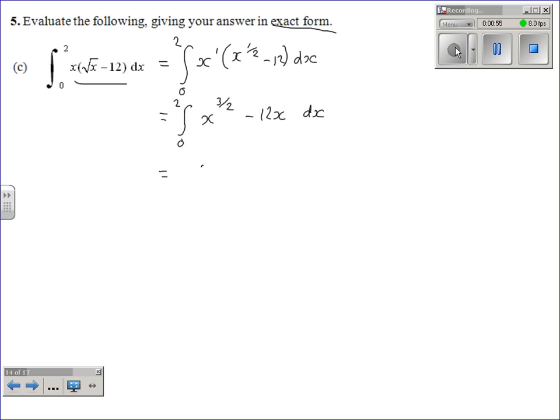We increase the power by 1, so 3 over 2 becomes 5 over 2, and divide by it. If you divide by 5 over 2, it's exactly the same as times by 2 fifths, so I'm going to write that at the front. Likewise, we increase the power by 1, it's a 1 at the moment, so it becomes 2, and divided by 2. You've integrated now, so you need square brackets, and you need to write down your limits.